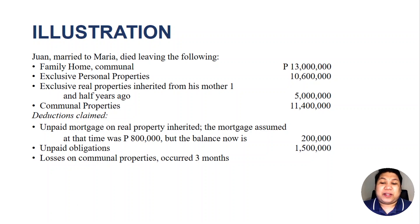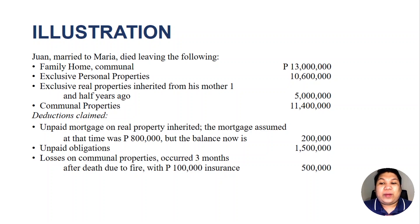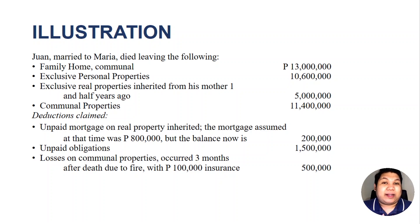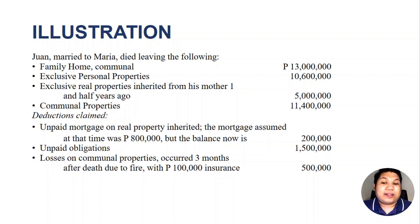We also have losses on communal properties that occurred 3 months after death due to fire, with insurance of 100,000 pesos. For any loss to be deductible from the gross estate, the loss should have been incurred after the death of the decedent but before the last day of filing or the settlement of the estate. Since these losses occurred 3 months after death due to fire, we can deduct this loss as a communal deduction. However, the amount to be deducted from the communal gross estate will only be 400,000 pesos because there was already insurance, and that 400,000 is still not recovered by the insurance.